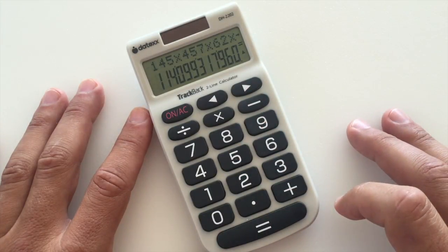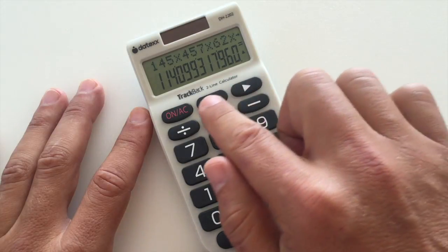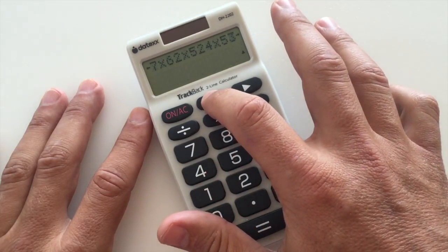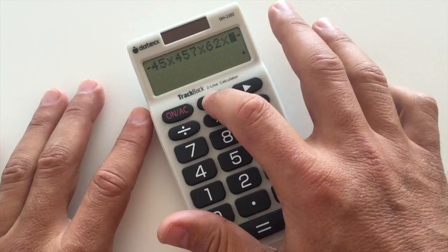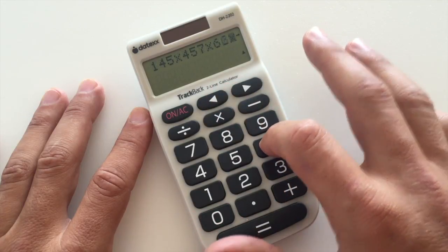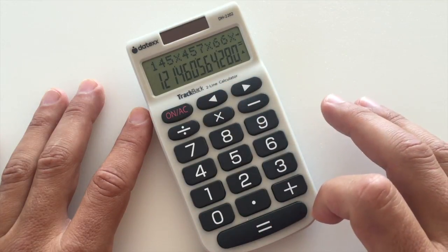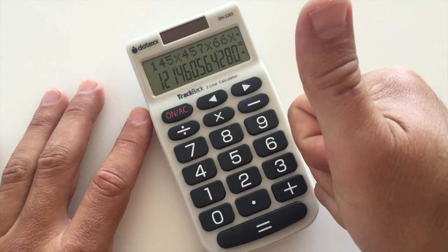At the end, if something doesn't look right, you can track back through the calculation work and see if you need to make a correction. If so, just replace the number and hit equals and you're all set.